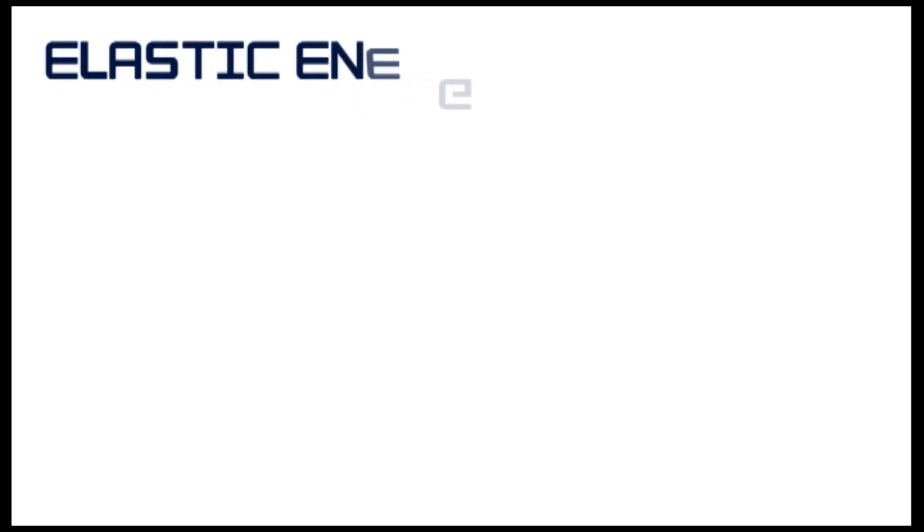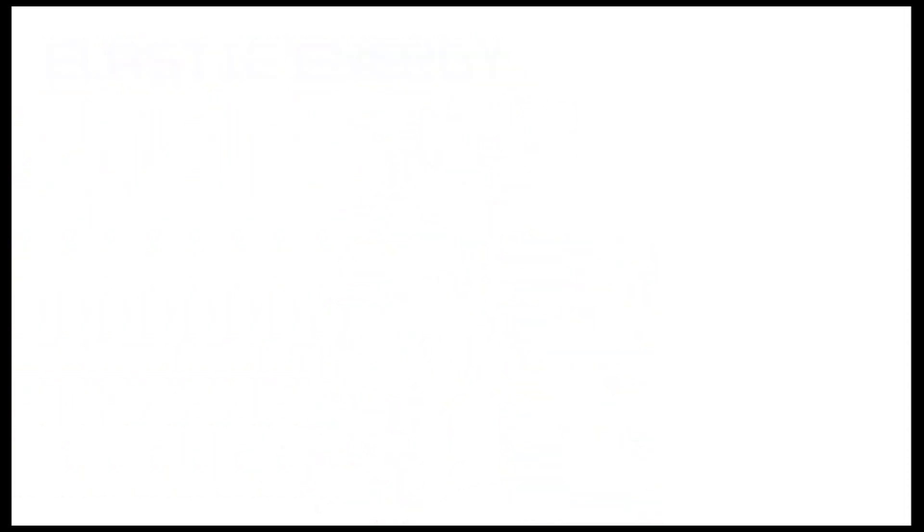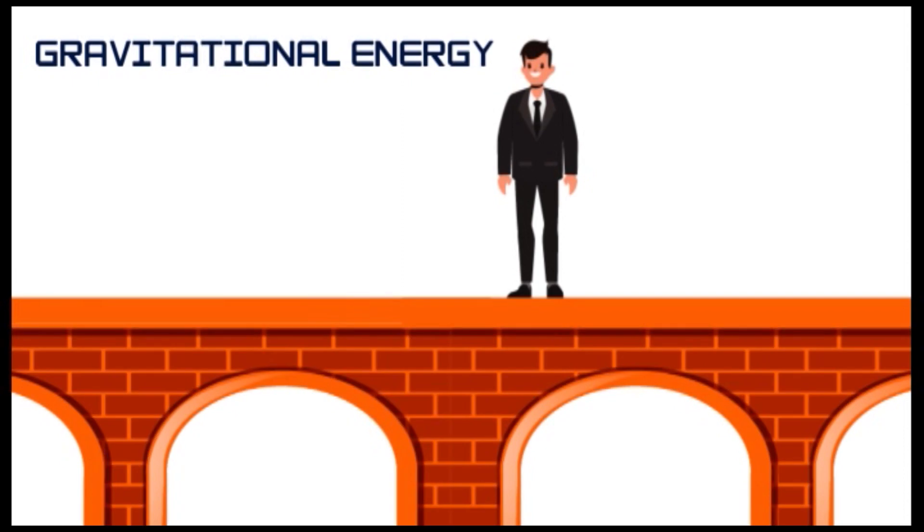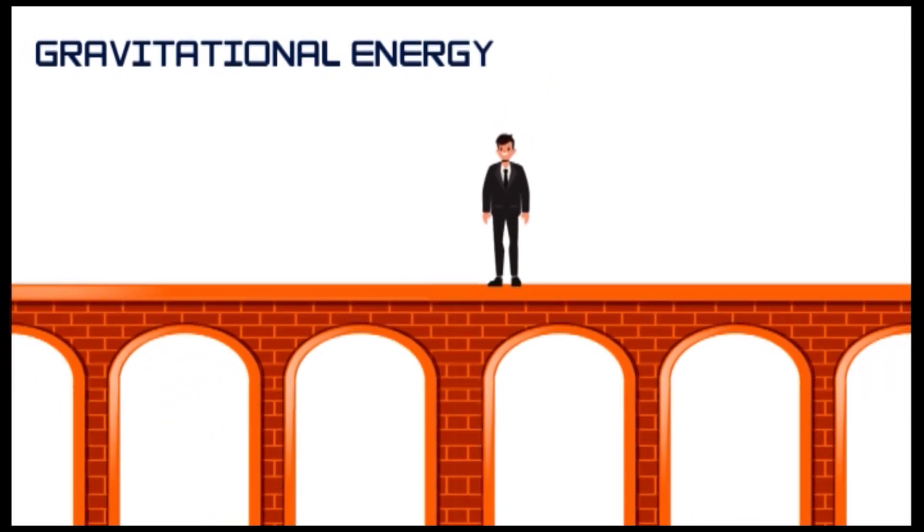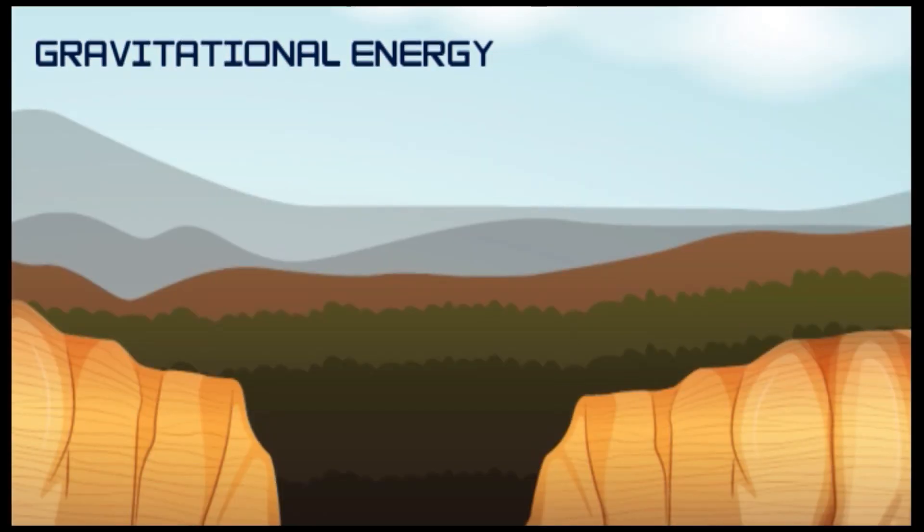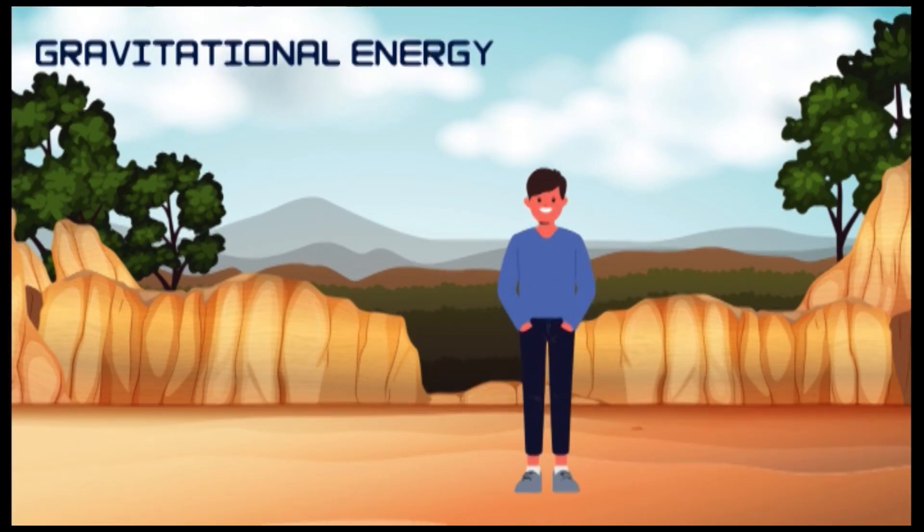Elastic energy is the form of potential energy, energy which is stored in an elastic object such as a spring or elastic band. Gravitational energy is another kind of potential energy. A person who is standing on the bridge experiences more gravitational energy than the person who is standing on the ground. This energy is associated with gravity or gravitational force.